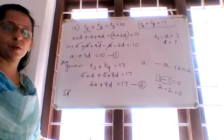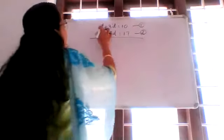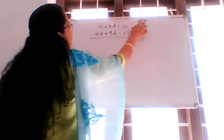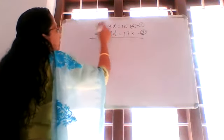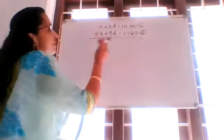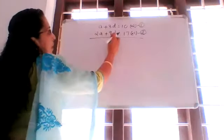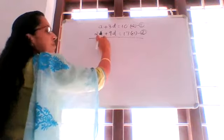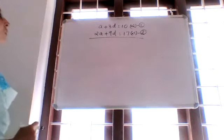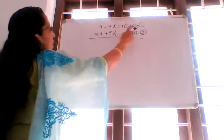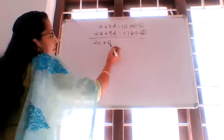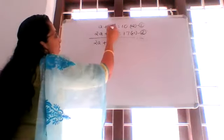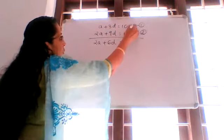Solving equations 1 and 2 simultaneously by equating coefficients of A. Multiply equation 1 by 2: 2A plus 6D is equal to 20. Equation 2 remains: 2A plus 9D is equal to 17.